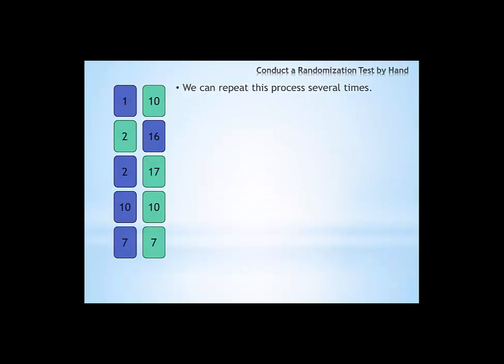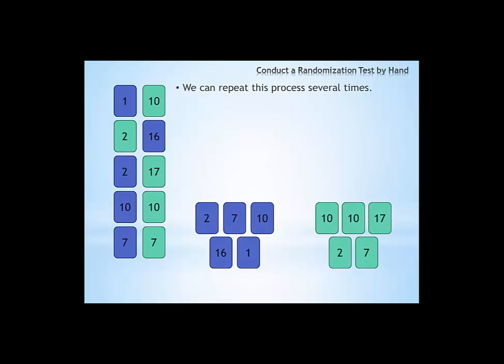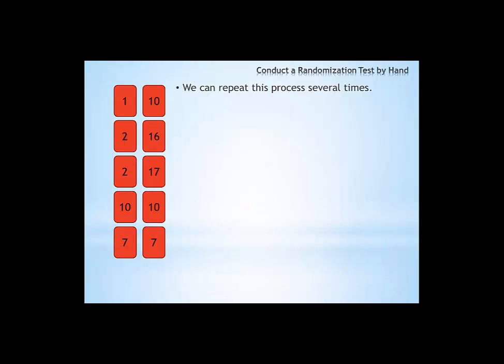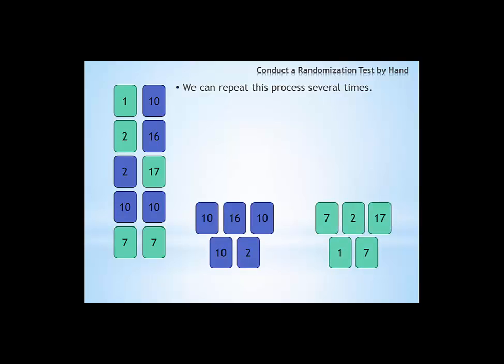We randomly assign the cards to treatments and control groups, calculate the averages, and here we found a difference of 2. And let's do it again. Have 10 cards, randomly pick 5 for the treatment group and 5 for the control group, calculate the difference. Here we observe a difference of negative 2.8.